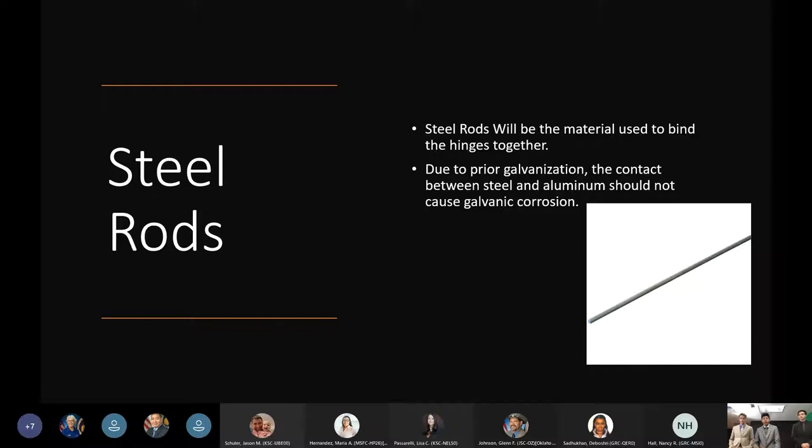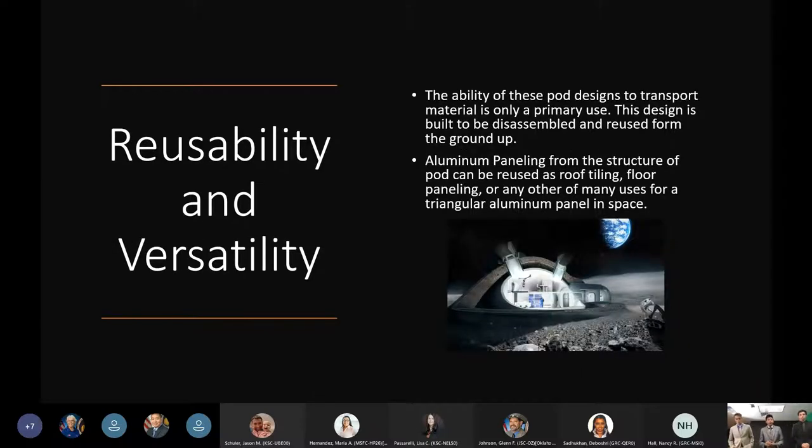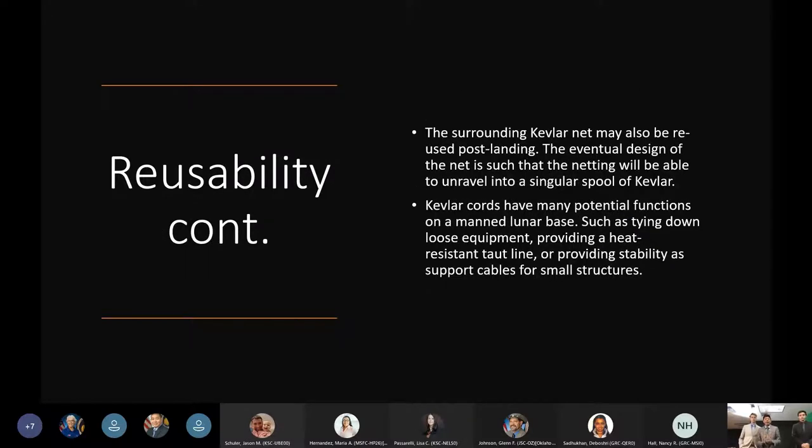One of our key points is reusability and versatility. The pods can be disassembled into separate panels, and with these panels you can make a geodesic sphere dome, tiling for roads on the moon, or use them for other constructive purposes. For the kevlar net itself, we're not expecting it to survive the impact, but if it does it can unravel into a singular spool of kevlar and be used as rope or support cables for small structures.